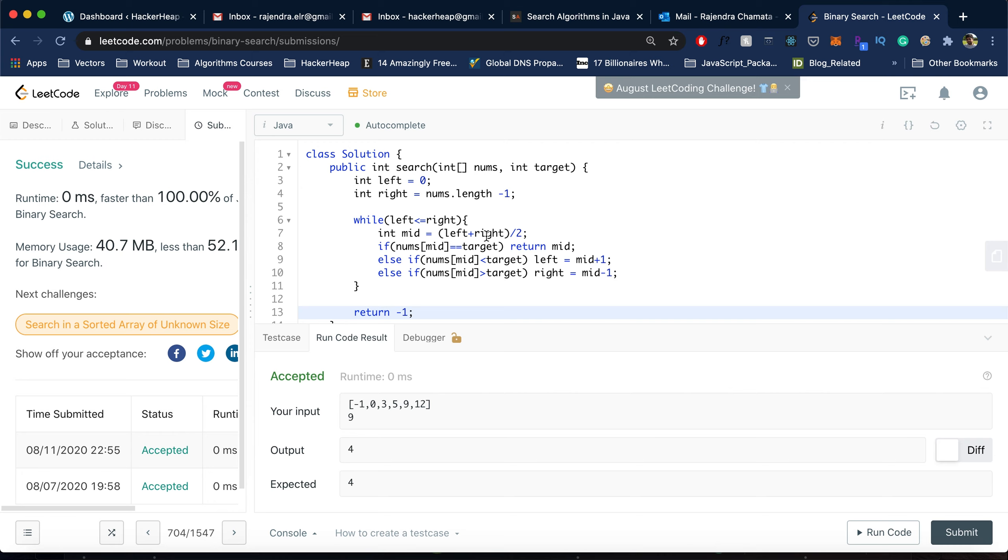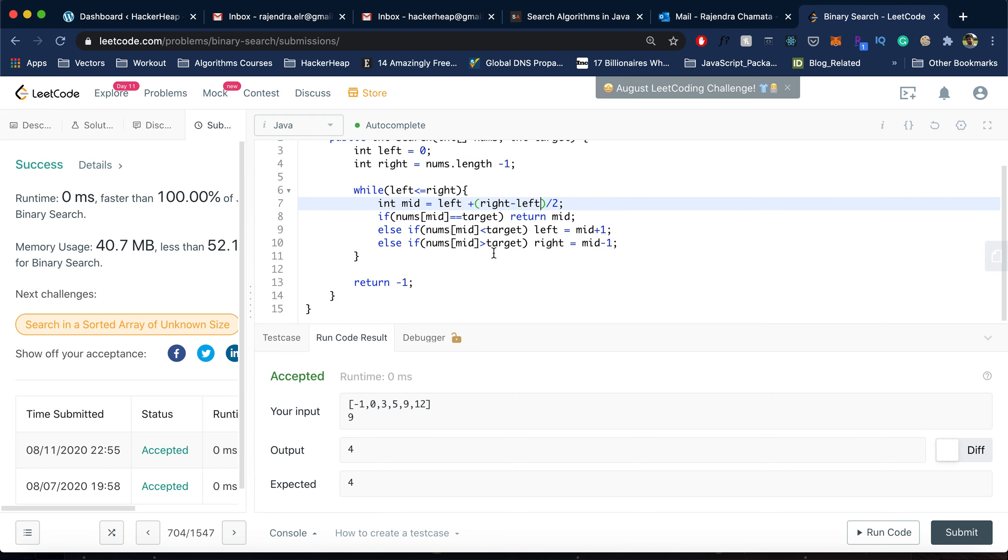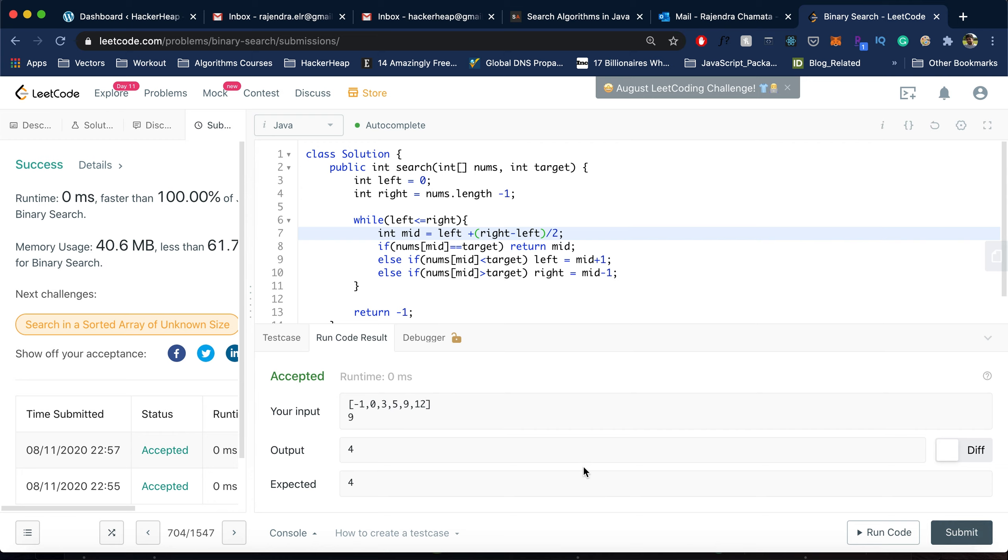When we try to add those it will go out of bounds which we don't want to happen. To keep it in bounds, we can calculate the mid using right minus left by 2, which will help us if the index goes out of bounds. It worked.